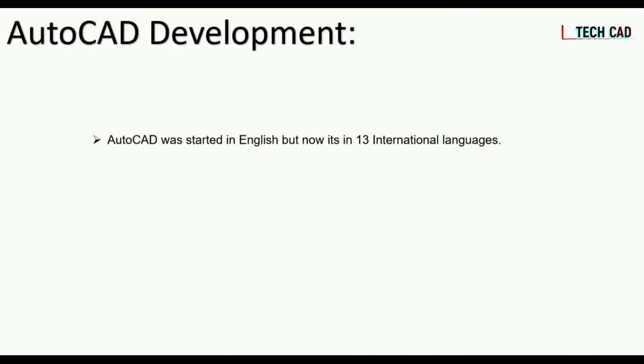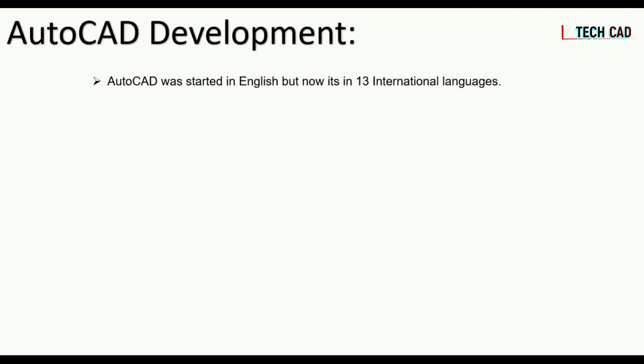In terms of AutoCAD development, in the old days AutoCAD was released in English only. Nowadays, AutoCAD is available in nearly 13 international languages — Chinese, Japanese, and every major language has its own AutoCAD version. So you can use the software in your own language. From 2010 onwards, it was also released as a mobile app.